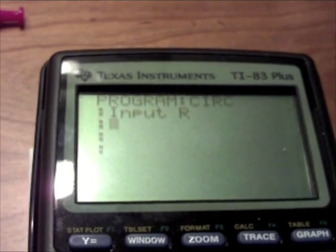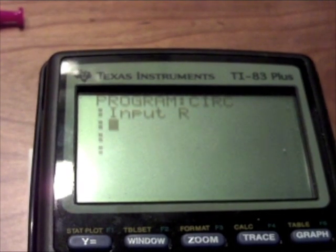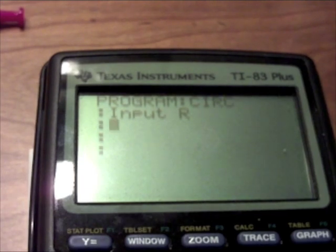So after you have that, you need to figure out the equation. For area, it is radius squared times pi. So then what you do is you go, then you click enter after you've done input R, click enter.